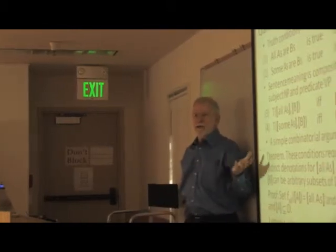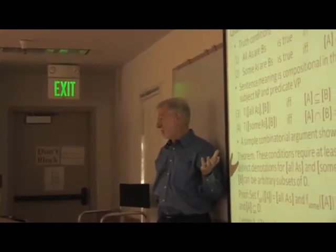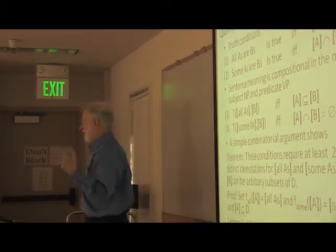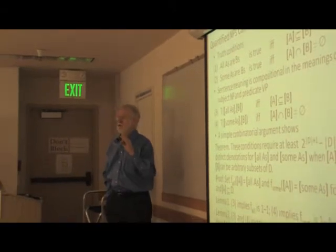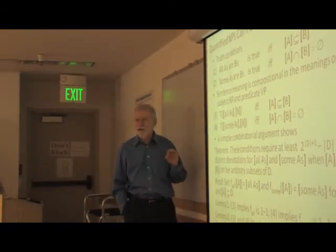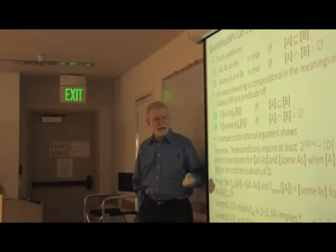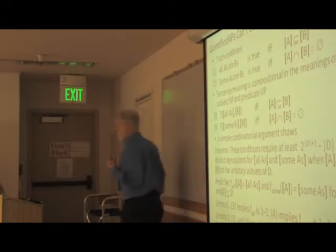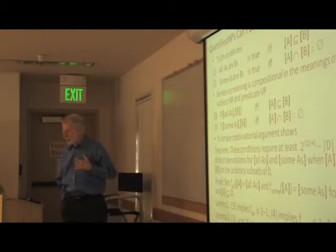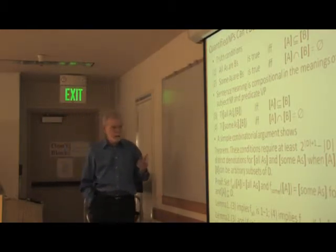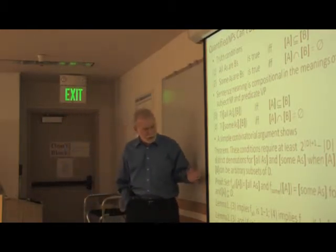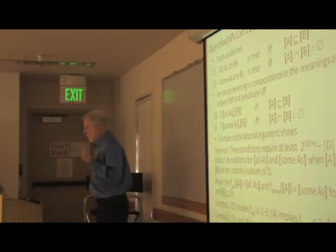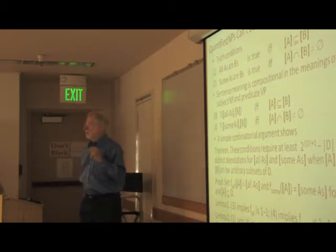In infinite domains, you need more than a simple cardinality argument because you can play coding tricks that would actually encode the denotations in the available sets. And so you'd need additional properties beyond these, things like isomorphism invariance or conservativity. But I find this result really a remarkably interesting one